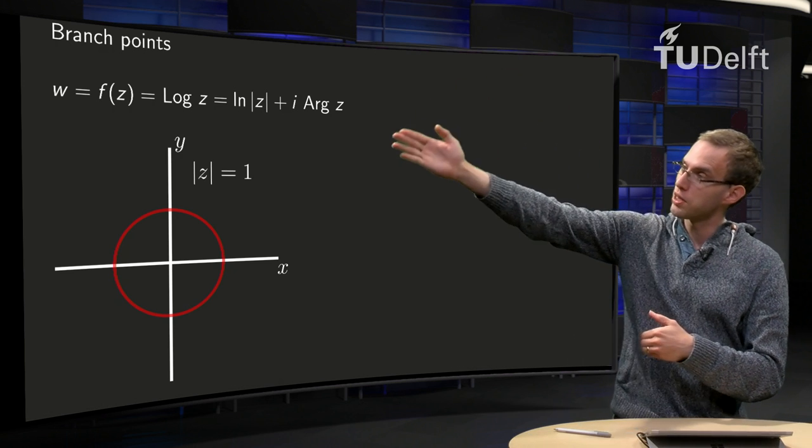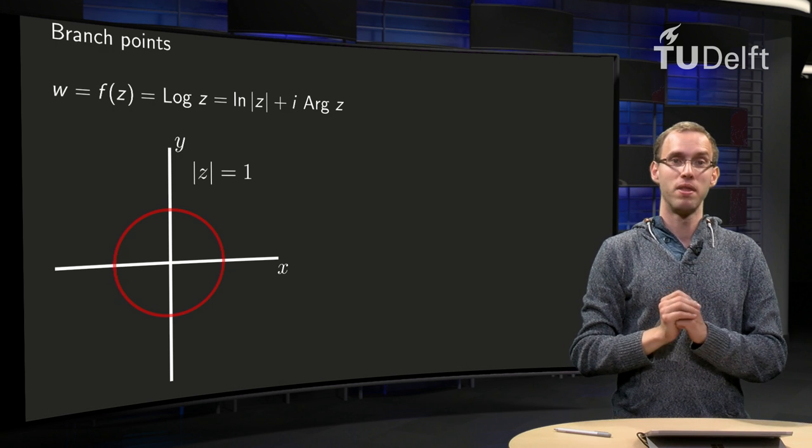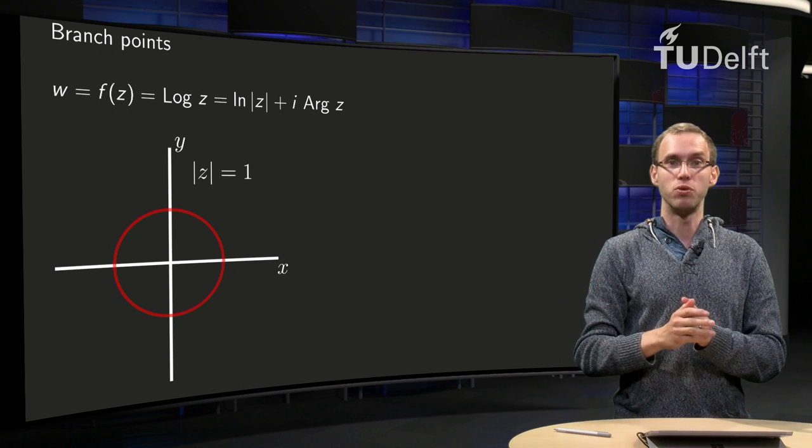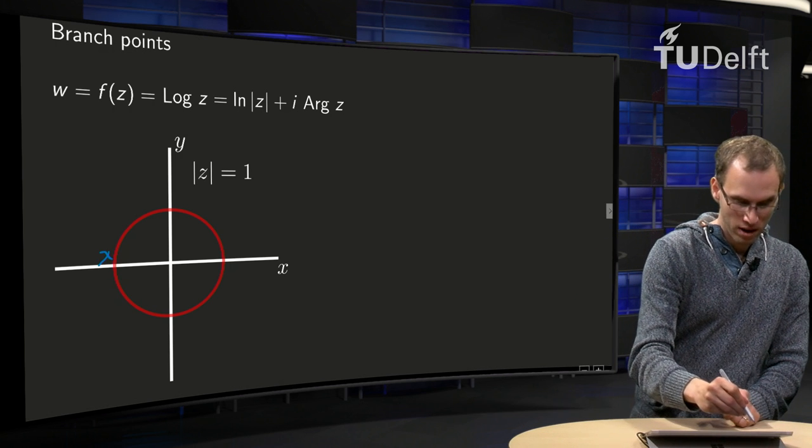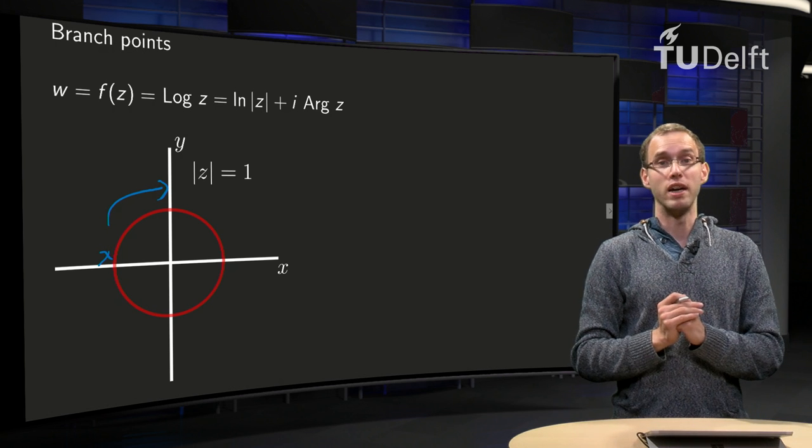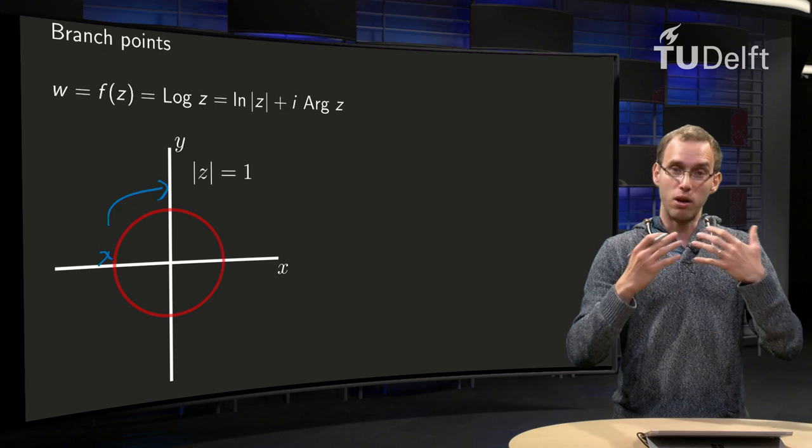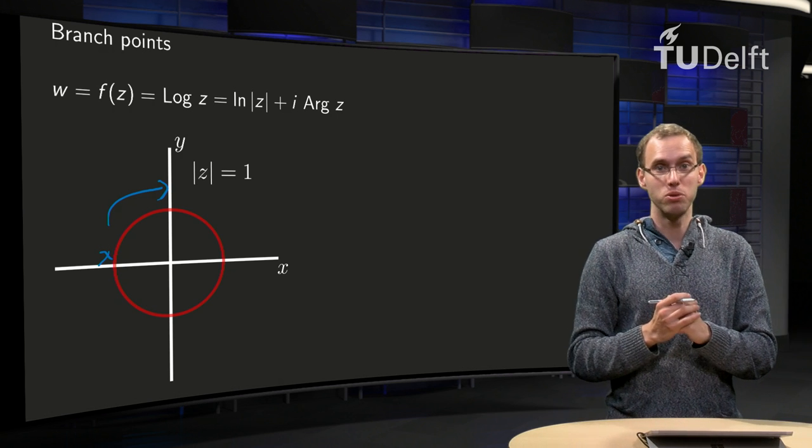And then we are going to look at what happens if we travel around the unit circle in the domain. So we take norm of z equals 1, and we start over here, and then we are going to travel clockwise in the domain. We are going to look at what happens in the codomain with our values.